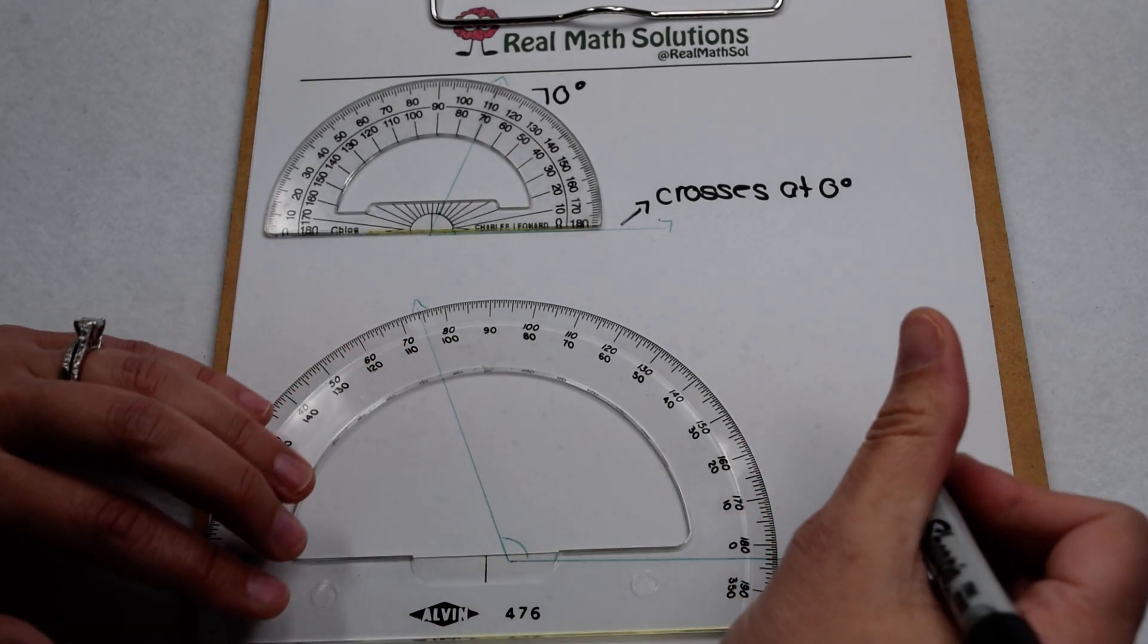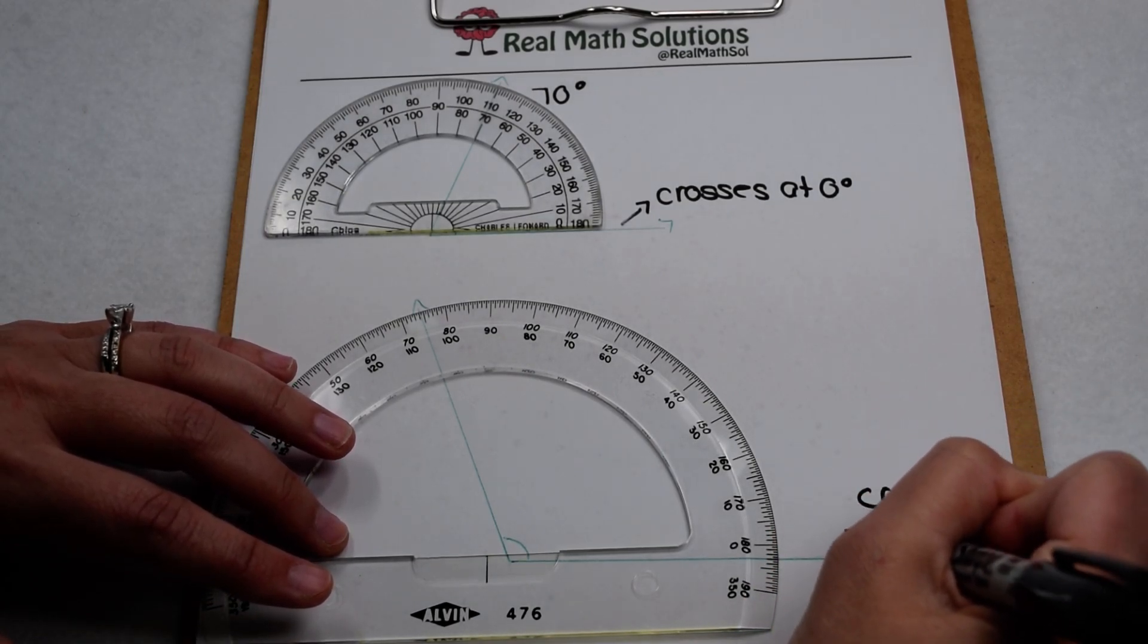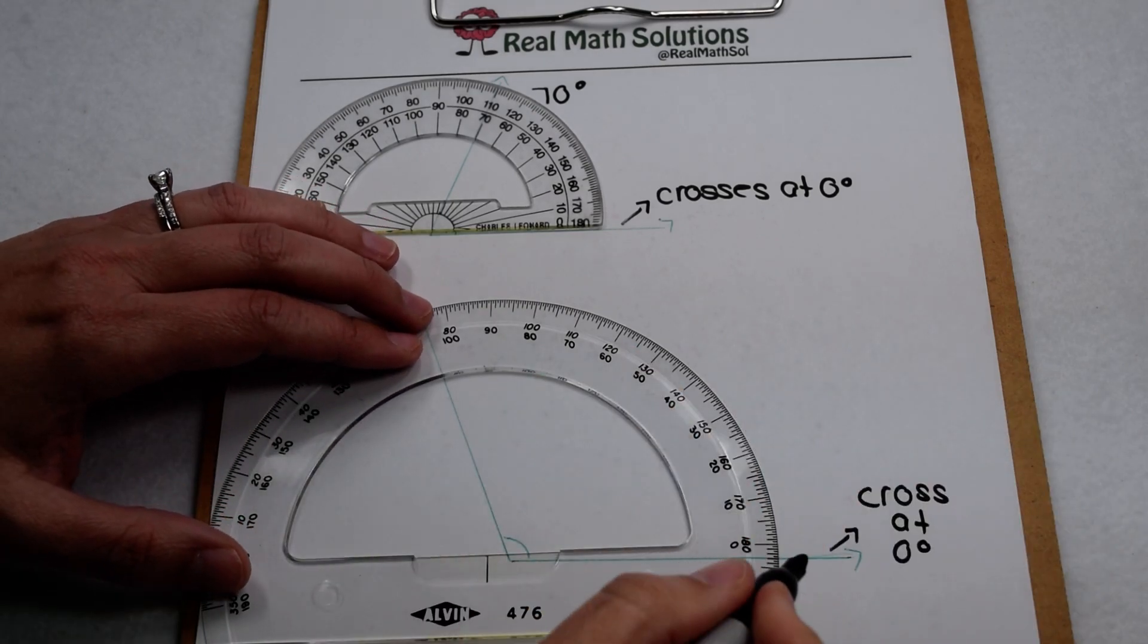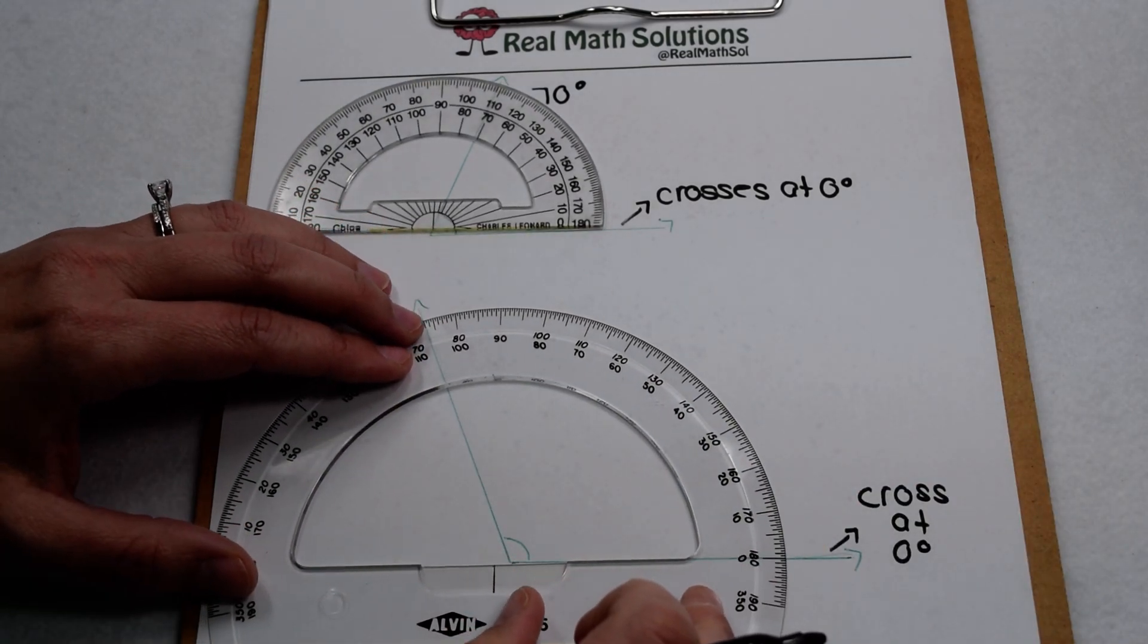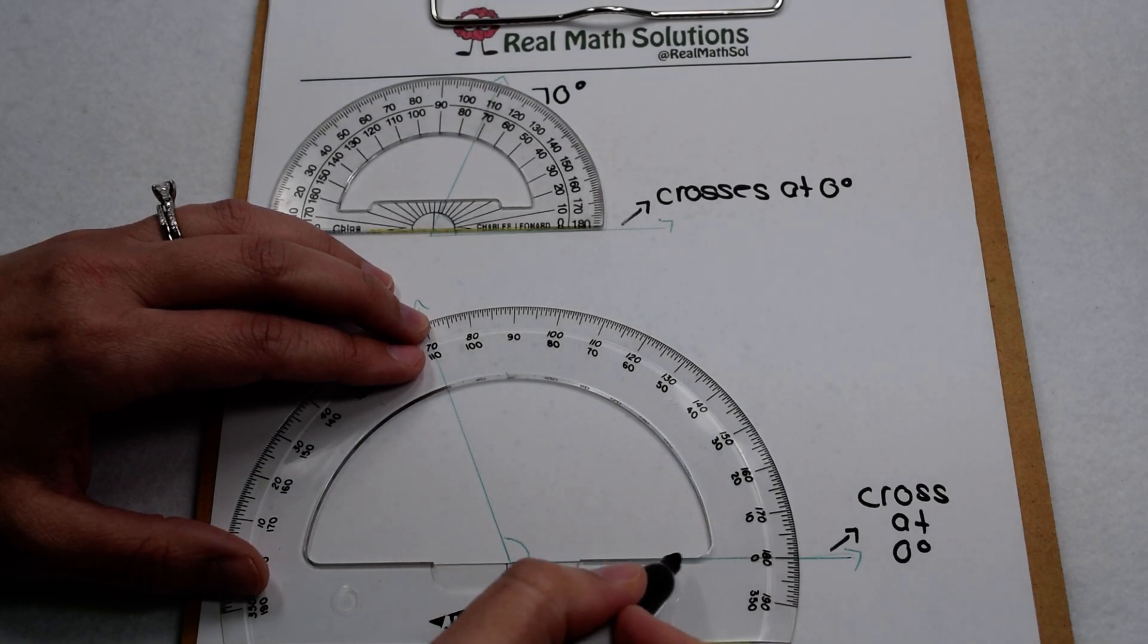Again, the key is looking to see where this base ray is going to cross at zero degrees. So when we line up our protractor, here's zero degrees. So as we do that, we can see that means we're going to line up on the inside of our protractor this time.